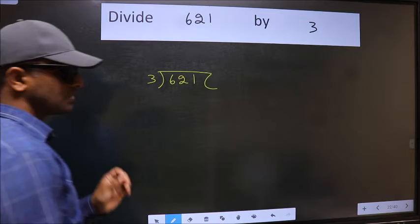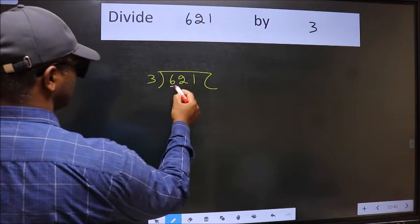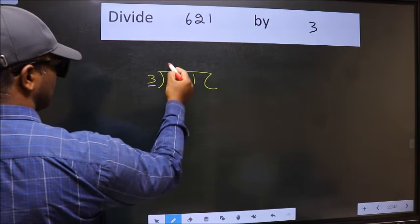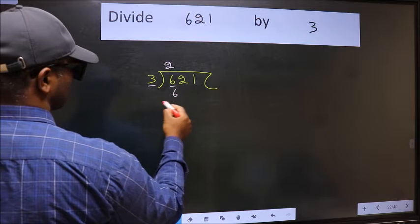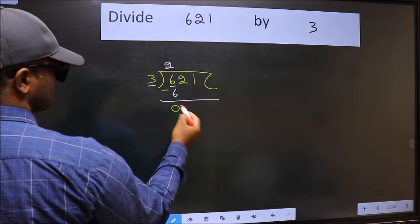This is your step 1. Next, here we have 6 and here 3. When do we get 6 in the 3 table? 3 times 2 is 6. Now we should subtract. We get 0.